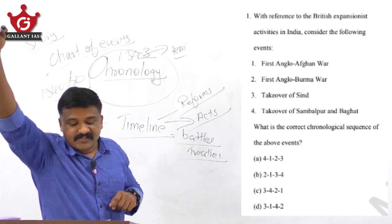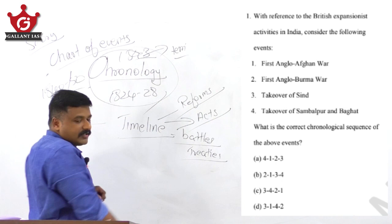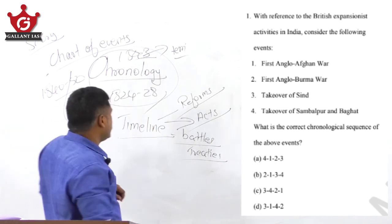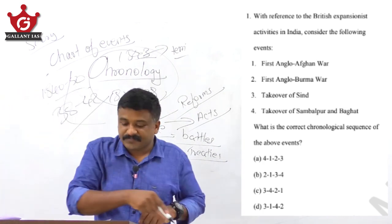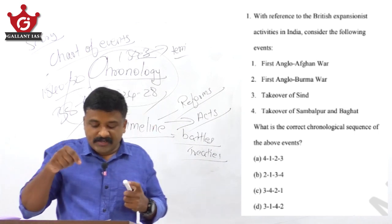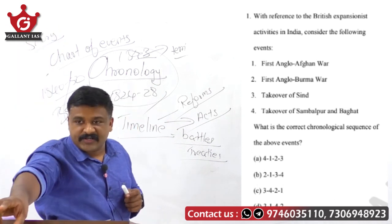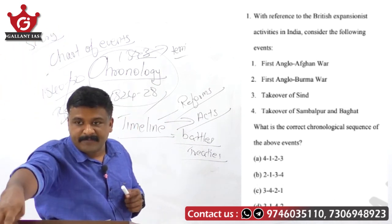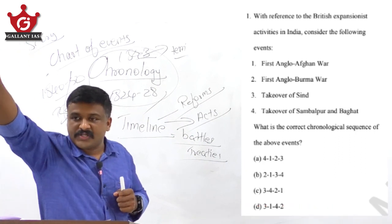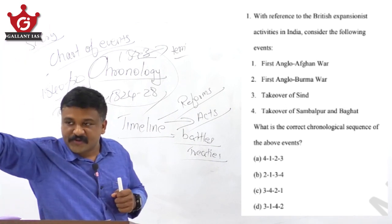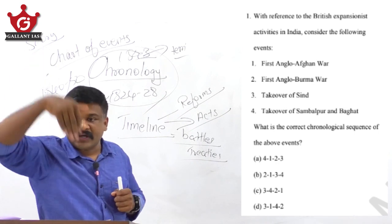The First Anglo-Burmese War was in the 1824–28 range. The First Anglo-Afghan War was in the 1838–42 range. So your chronology answer is 2, 1, 3, 4. The solution: prepare charts of modern India battles, treaties, viceroys, constitutional reforms, legislative reforms, social movements, and freedom struggle movements — those timelines will save you in chronology questions.